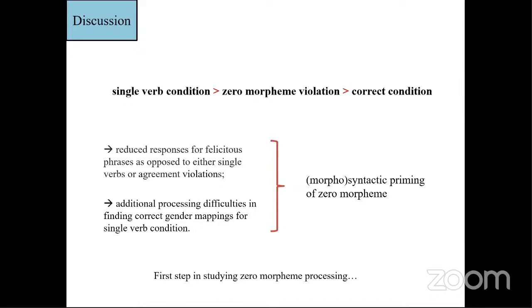And of course, we need more control conditions and study other representations of zero morpheme in Russian and maybe some other languages. But this is like the first main step in studying zero morpheme processing. Yes, and this is all. I think if you have any questions, please.